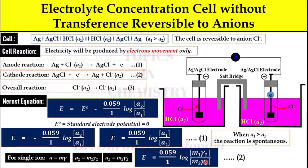You can see that the electrolyte concentration cell without transference — whether reversible to cations or anions — does not depend on the transport number of the ions. However, in lectures 18 and 19 where I discussed electrolyte concentration cells with transference, the final E cell does depend on the transport number of cations or anions.